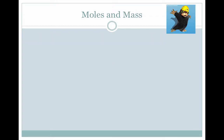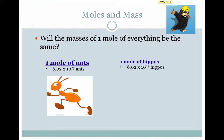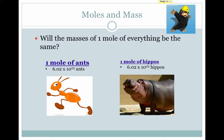Let's begin by thinking about how moles and mass are related. Do you think the masses of one mole of everything will be the same? Consider this example. If I have a mole of ants, I have 6.02 times 10 to the 23rd ants. If I have a mole of hippos, I have 6.02 times 10 to the 23rd hippos. But clearly, a mole of ants weighs far less than a mole of hippos. So the mass of one mole of a substance is different from the mass of one mole of a different substance.